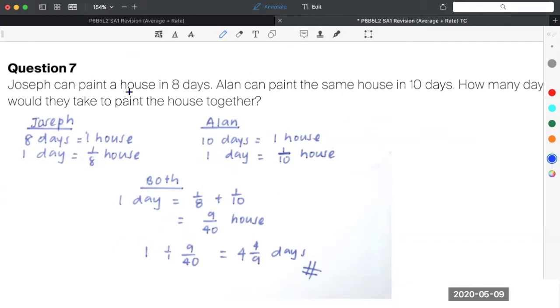First of all, Joseph can paint the house in eight days. So the first subject will be Joseph. Eight days, one house. What is the rate in a day? What fraction of the house is painted in a day? It will be one divided by eight. Eight days, paint one house, Joseph on his own. What is the rate? In a day, one eighth of the house.